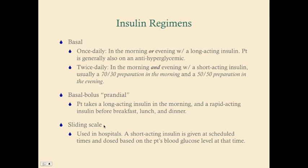The sliding scale insulin regimen tends to be used in hospitals. Patients who are hospitalized are on various medications, are often sick with inflammatory processes or infections, and that can really alter the insulin they need. The sliding scale doses the amount of insulin to the patient's blood glucose level. Because we have nurses and doctors nearby, we can be more precise. A short-acting insulin, generally human regular insulin, is given at scheduled times and dosed based on the patient's blood glucose level — usually every four or six hours.